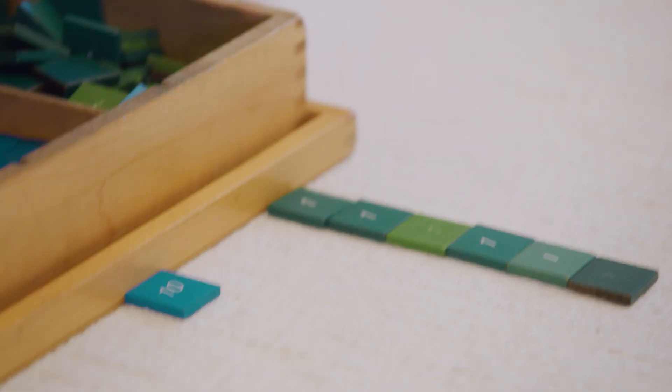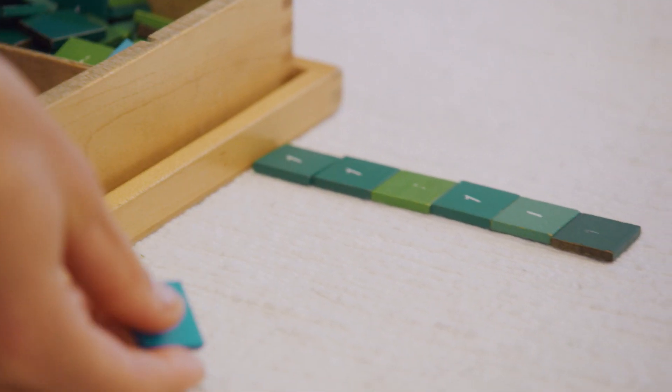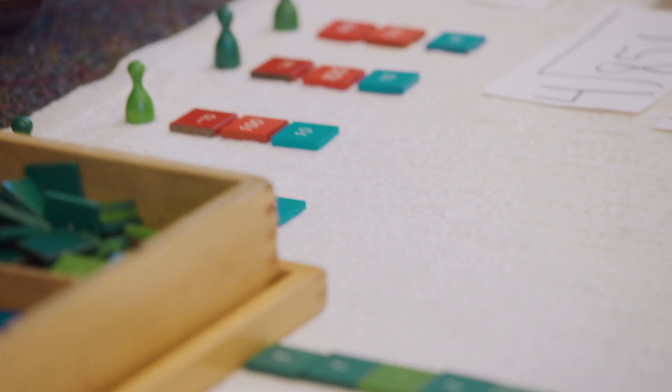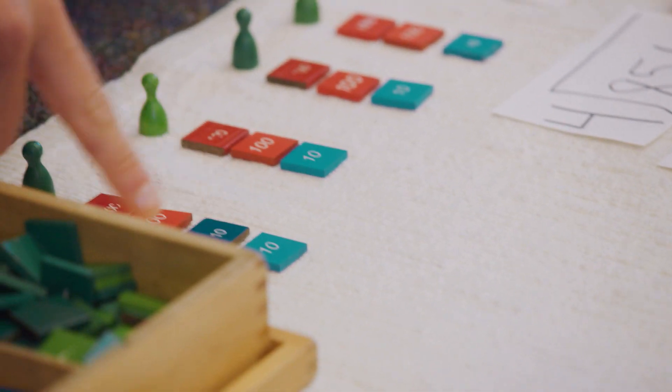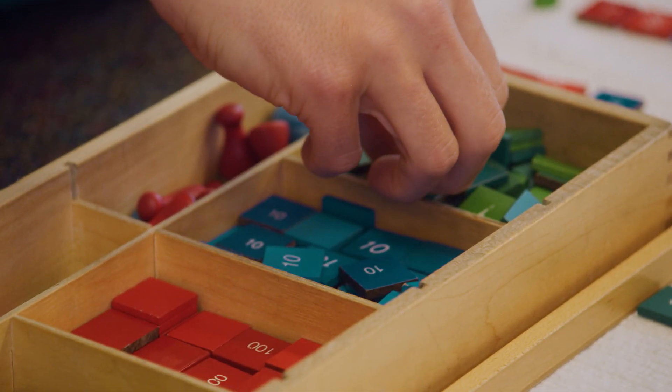Each skittle now has 10. I still have one more 10 to distribute. I can't do that—it's not fair. So I'm going to take my 10 and exchange it for 10 units.